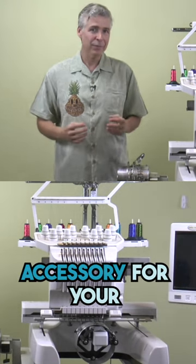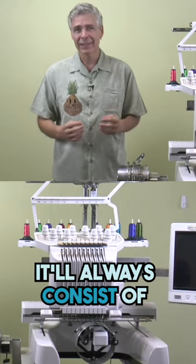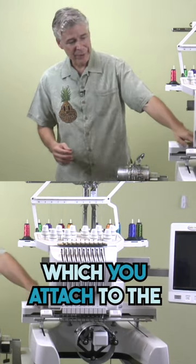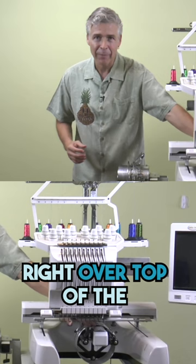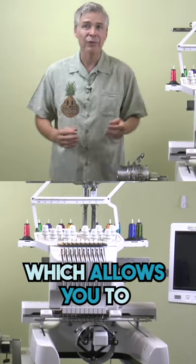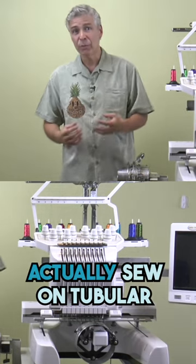Now, if you do get this accessory for your machine, it'll always consist of a driver, which you attach to the machine, and it will fit right over top of the arm that comes out, which allows you to sew on tubular items.